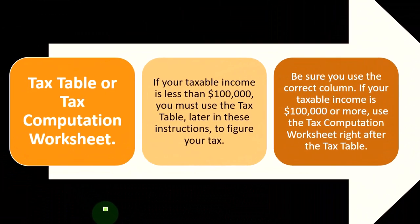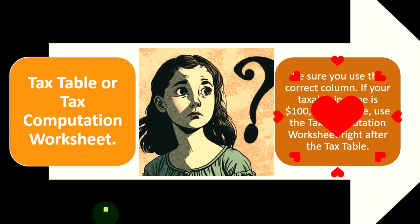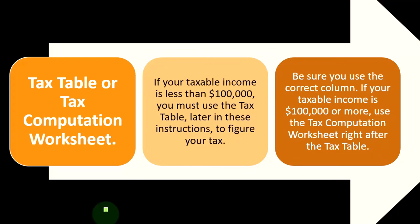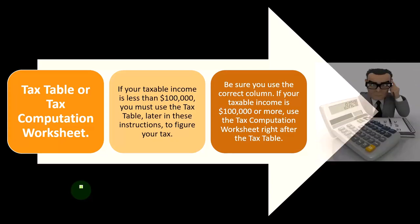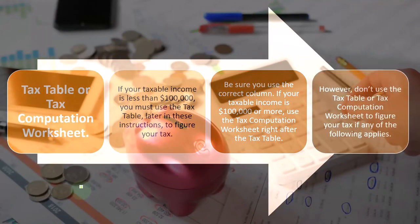Be sure to use the correct column. If your taxable income is $100,000 or more, use the tax computation worksheet right after the tax table. The tax computation worksheet gives you a better idea that you're using a progressive tax system, although they still simplify the calculation by giving you a bottom-line number and only making you calculate the tax on your highest tax bracket — your marginal tax rate — which is a bit easier than calculating every tier.